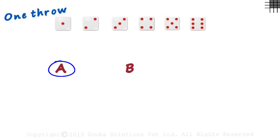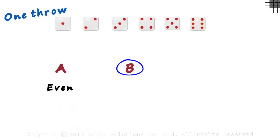Event A is getting an even number, and event B is getting an odd number. Remember, we have to consider just one throw.